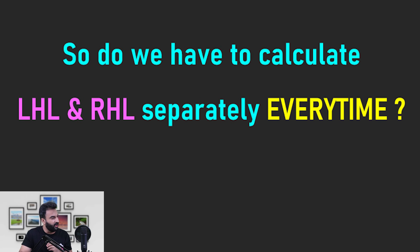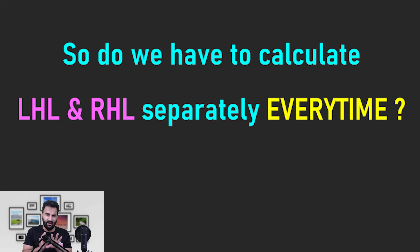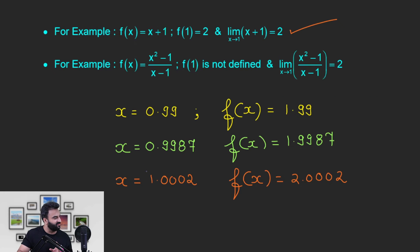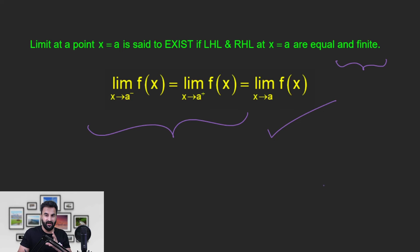तो क्या हमेशा LHL और RHL को अलग-अलग calculate करना पड़ेगा? कब करना पड़ेगा, कब नहीं करना पड़ेगा? यह काफी हद तक depend करता है अपने knowledge पर। जैसे x+1 के लिए — चाहे x की value 1 से ज्यादा लें या कम लें, function 2 को approach करता है। कई बार करना पड़ेगा, क्योंकि कई बार ऐसा होगा कि left-hand limit और right-hand limit अलग-अलग आएंगे। कुछ examples हम लेंगे — but you have to trust your knowledge।